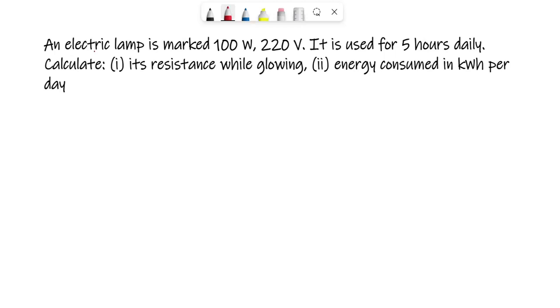Let's start with the fourth one. It says an electric lamp is marked 100 watt, 220 volt. It is used for five hours daily. Calculate its resistance while glowing. So you can see that the power is there, voltage is there, and you have to find the resistance.